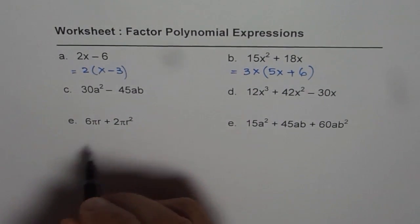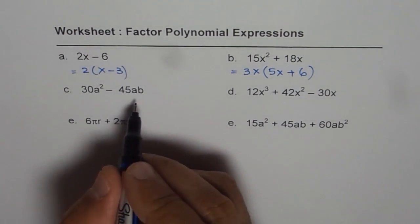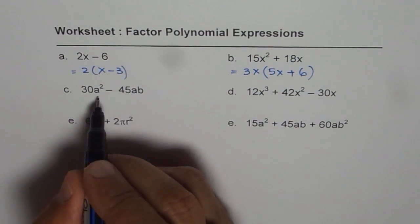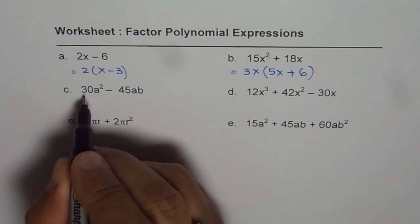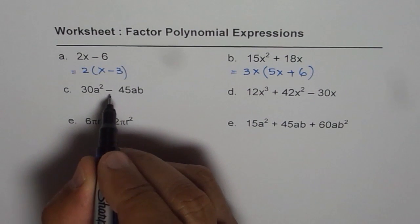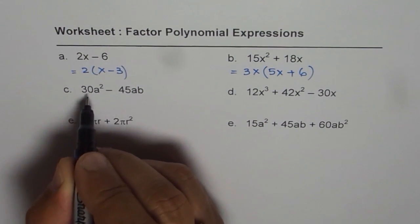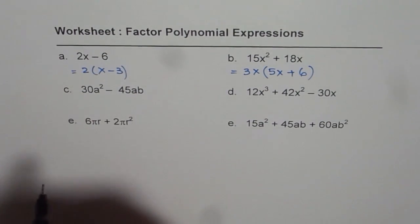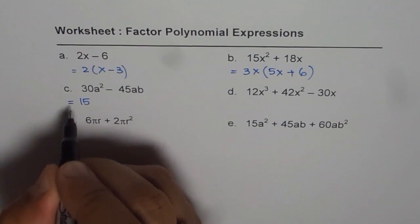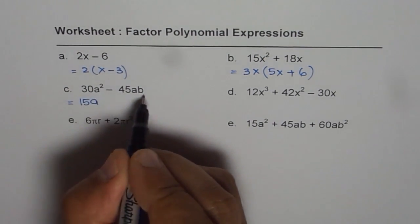Now, here we have a binomial: 30a squared minus 45ab. 15 times 2 is 30, and 15 times 3 is 45. We have 15 as a common factor. A is also common.